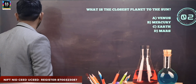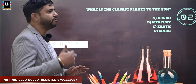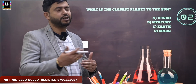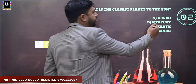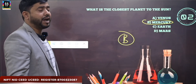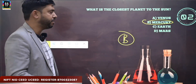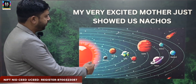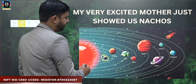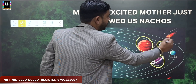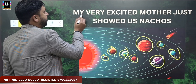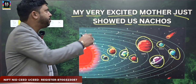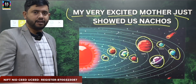The next question is: what is the closest planet to the sun? If you know the planet system you may be able to answer which planet is first, second, third. The closest planet to the sun is Mercury — answer B. The easiest method to remember the planet system is the phrase: My Very Excited Mother Just Showed Us Nachos.